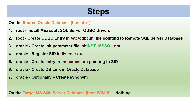As the Oracle user, we need to do three things: create an init parameter file called initinst.mssql.ora — where inst.mssql becomes your Oracle SID — register this SID in listener.ora, and create an entry in tnsnames.ora pointing to this SID. Once done, log into the database and create the DB link, and optionally create a synonym. Importantly, there is nothing that needs to be done on the SQL Server target side — everything is done on the Oracle server.